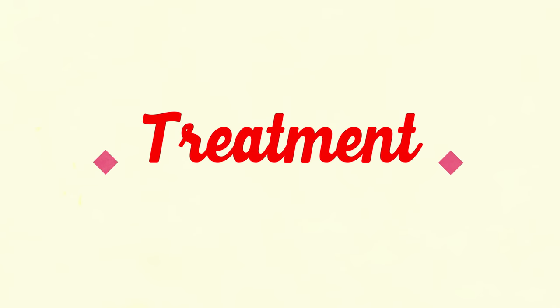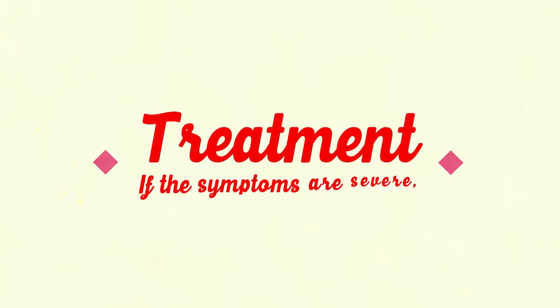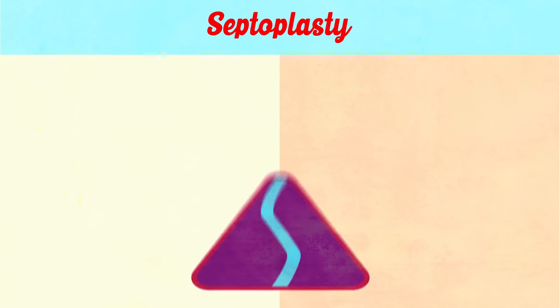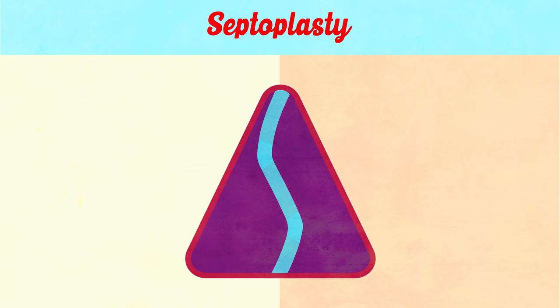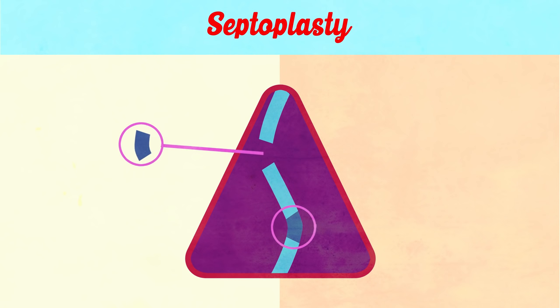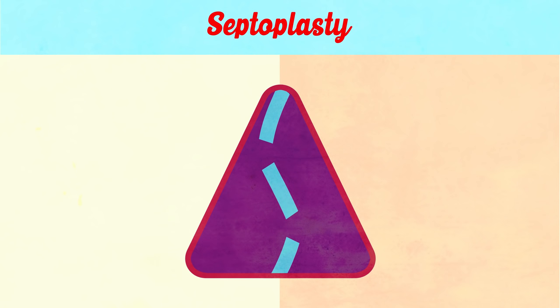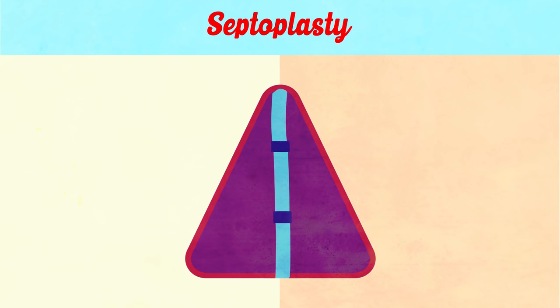Treatment: minor cases of DNS require no treatment. If the symptoms are severe, then on reaching the age of 17, we can opt for septoplasty, in which the most deviated parts of the nasal septum are removed and the rest of the septum is corrected and repositioned using plastic means.